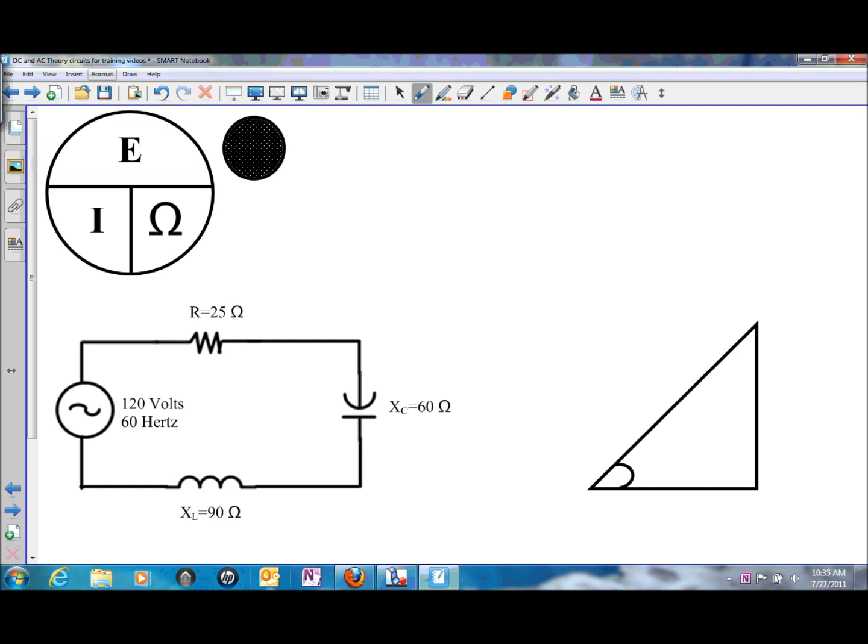In this presentation, we will be solving for impedance and current in a series RLC circuit. So we have one resistor, one capacitor, and one inductor in series with a power source.